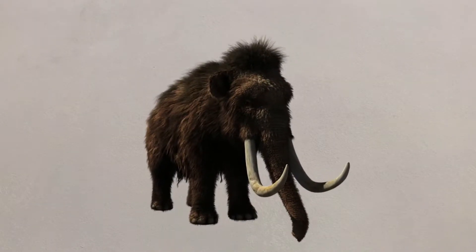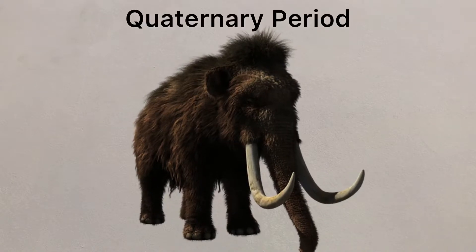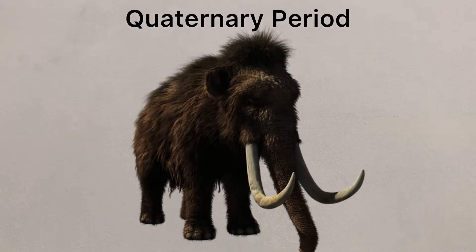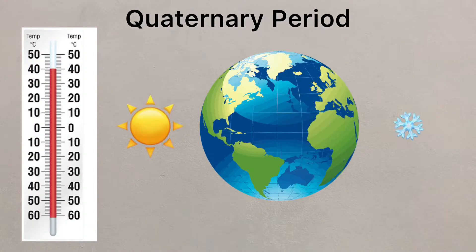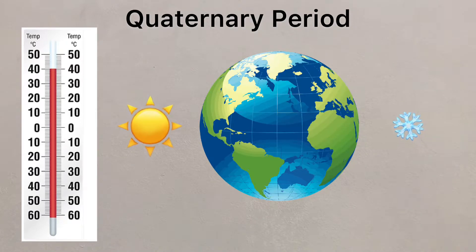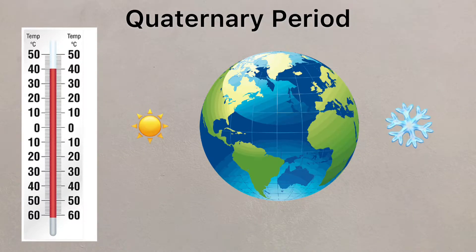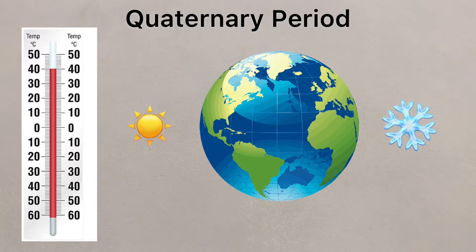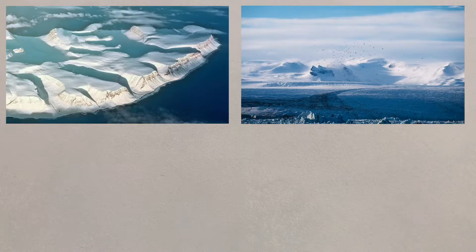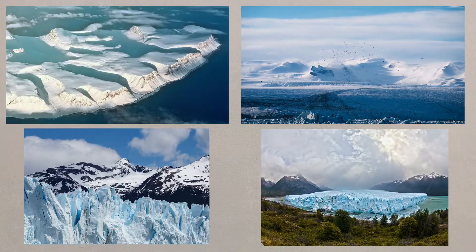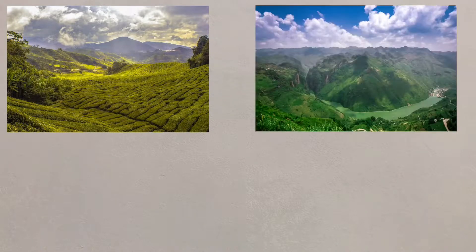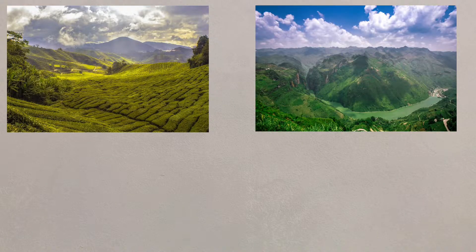The last 2.6 million years is known as the Quaternary Period, and during this time the temperature of the planet has fluctuated significantly. Even though the fluctuations see the temperature rising and falling, the overall trend has been a cooling of the planet. There have also been glacial periods, when ice covered large areas of Europe and North America, and interglacial periods — warmer periods between the glacial times.